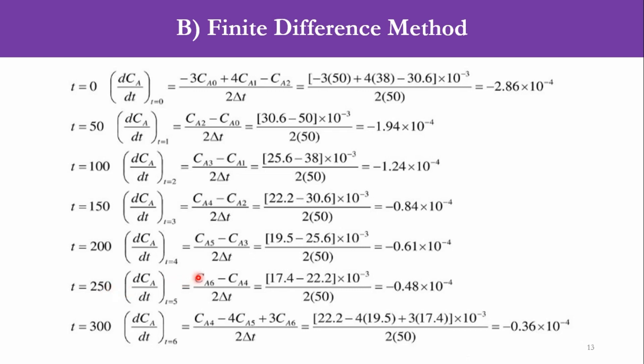For t=4 which is 200, CA5 and CA3. For t=5 which is 250, CA6 and CA4, and we get the answer of -0.48×10^-4. So this is how we calculate for the initial point, for the final point, and for the intermediate points. If we increase the points, the intermediate points will increase and the initial formula obviously will remain the same, but this final formula will be a bit changed in that it will need to take some other concentration values. However, the overall structure of the formula will remain the same.